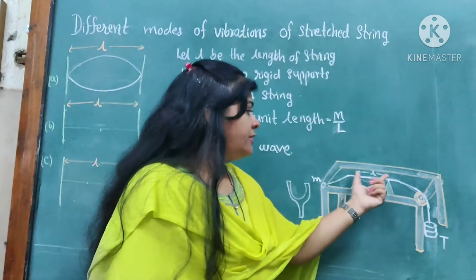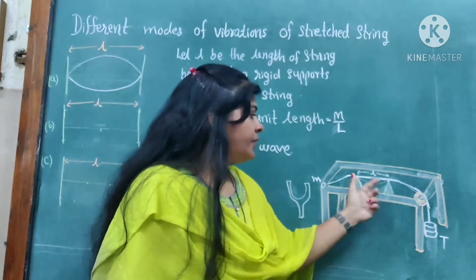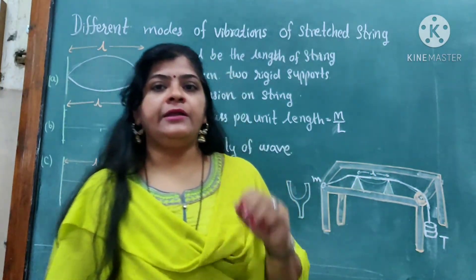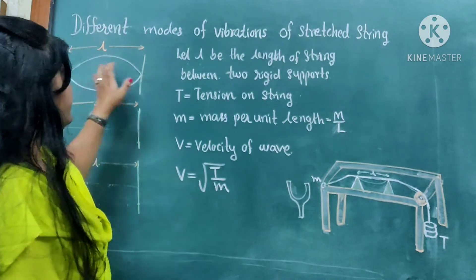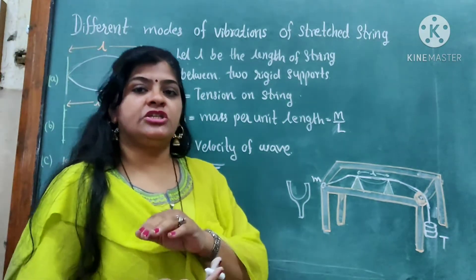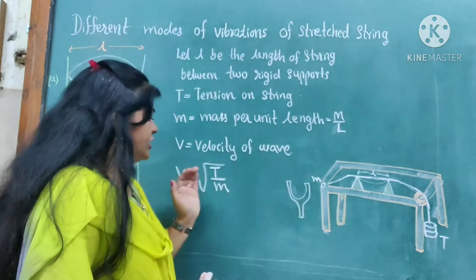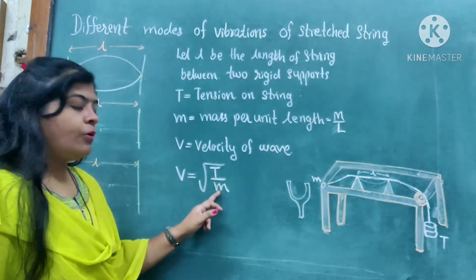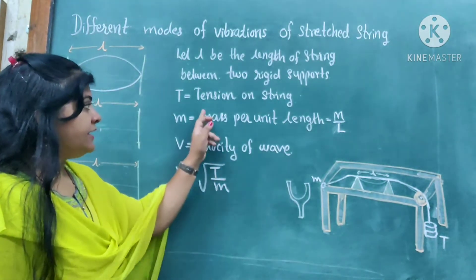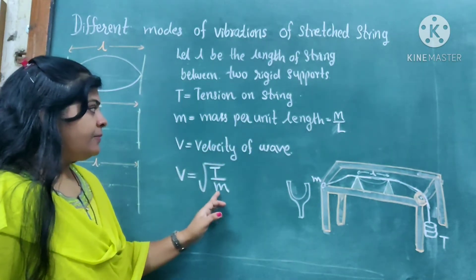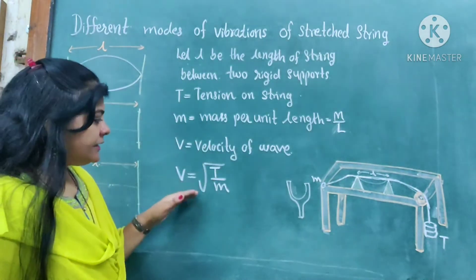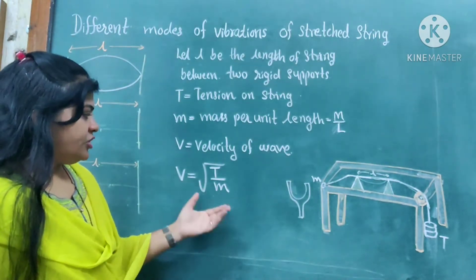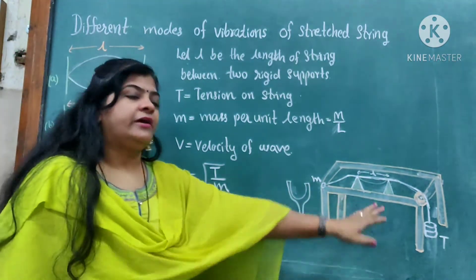In the stationary wave, we know that at the rigid points — at these two ends — a node is formed, and at the center an antinode is formed. We can see that the transverse wave is created, and that wave is a stationary wave having a velocity. This velocity depends upon two parameters. V is equal to the square root of T upon m, where T is the tension on the string and m is the mass per unit length. That ratio and the root of it gives the velocity of this stationary wave, which is produced in between the two knife edges.